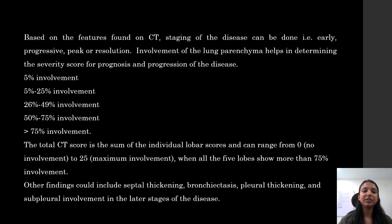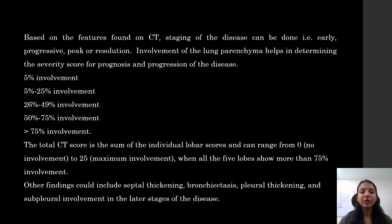Involvement of the lung parenchyma helps in determining the severity score for prognosis and progression of the disease, which can be either less than 5%, 5–25%, 26–49%, 50–75%, or more than 75% involvement. The total CT score is the sum of individual lobar scores and can range from 0, which is no involvement, to 25, which is maximum involvement when all 5 lobes show more than 75% involvement. Other findings could include septal thickening, bronchiectasis, pleural thickening, and subpleural involvement in the later stages of the disease.